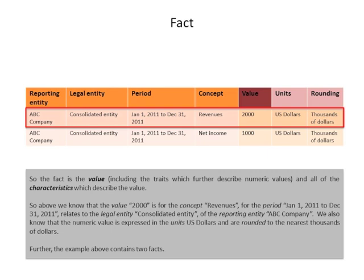Above, we know that the value 2,000 is for the concept revenues from the period January 1st, 2011 through December 31st, 2011. It relates to the legal entity — the consolidated entity — and the reporting entity, ABC Company. We also know that the numeric value is expressed in units of U.S. dollars, rounded to the nearest thousands of dollars.